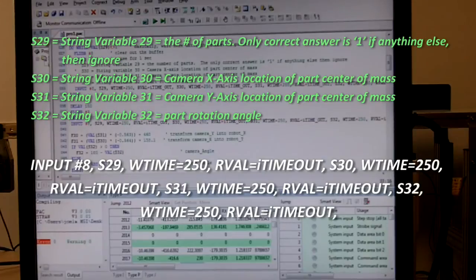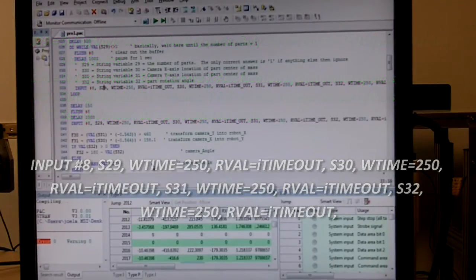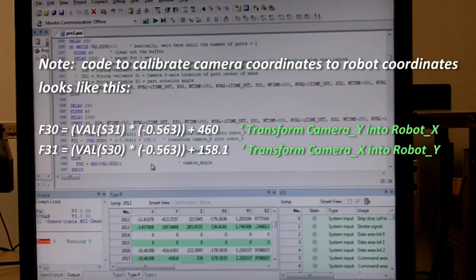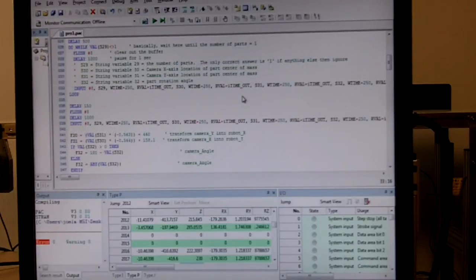One important note, which I'm not showing here, is we do have to transpose the camera's coordinate system into the robot's coordinate system, which in this case, I was able to easily do using some simple math. So essentially, it's just this one line of code in the robot, and we're done. Now, let's go ahead and run our task.